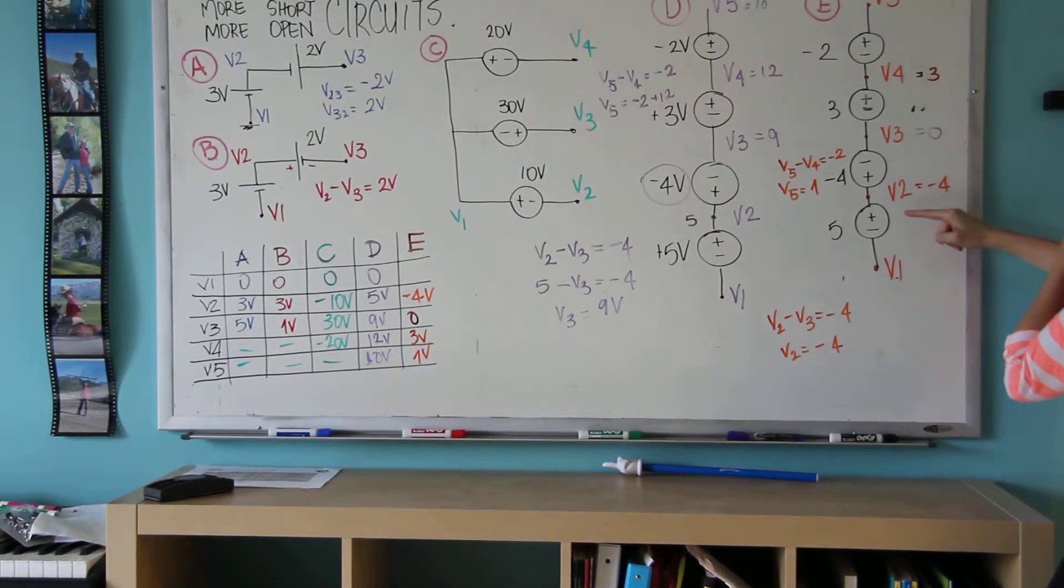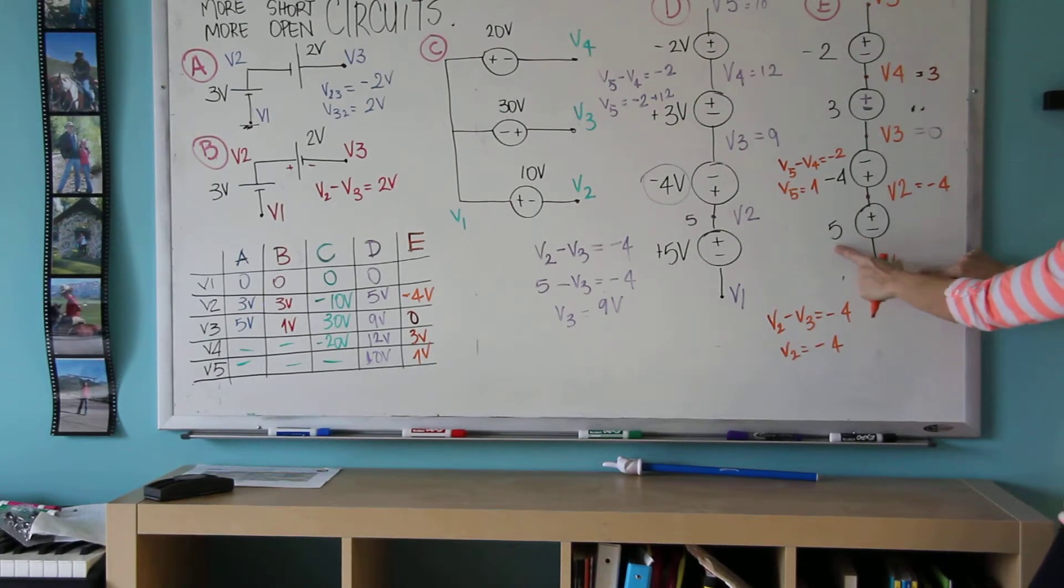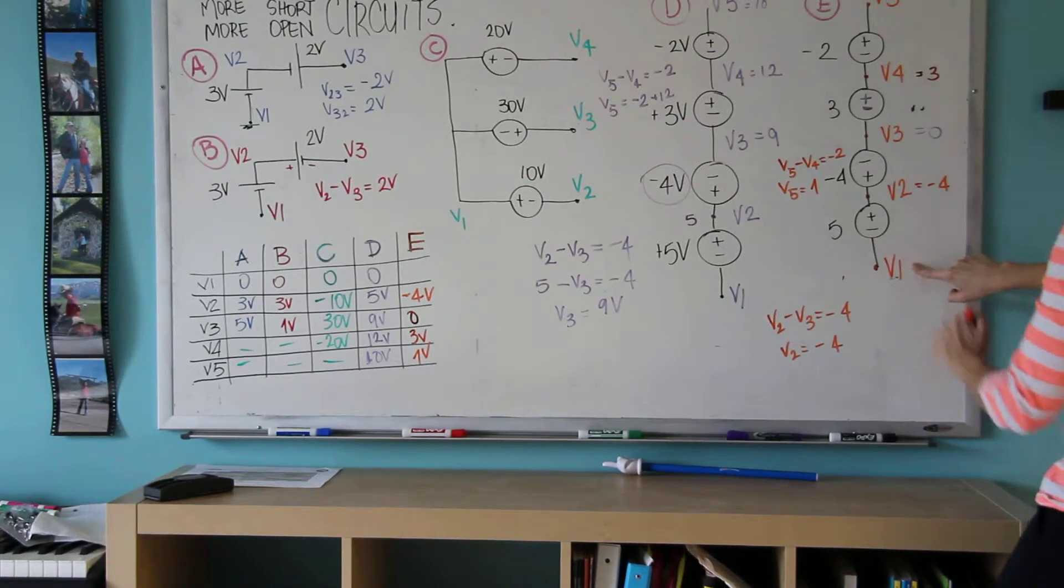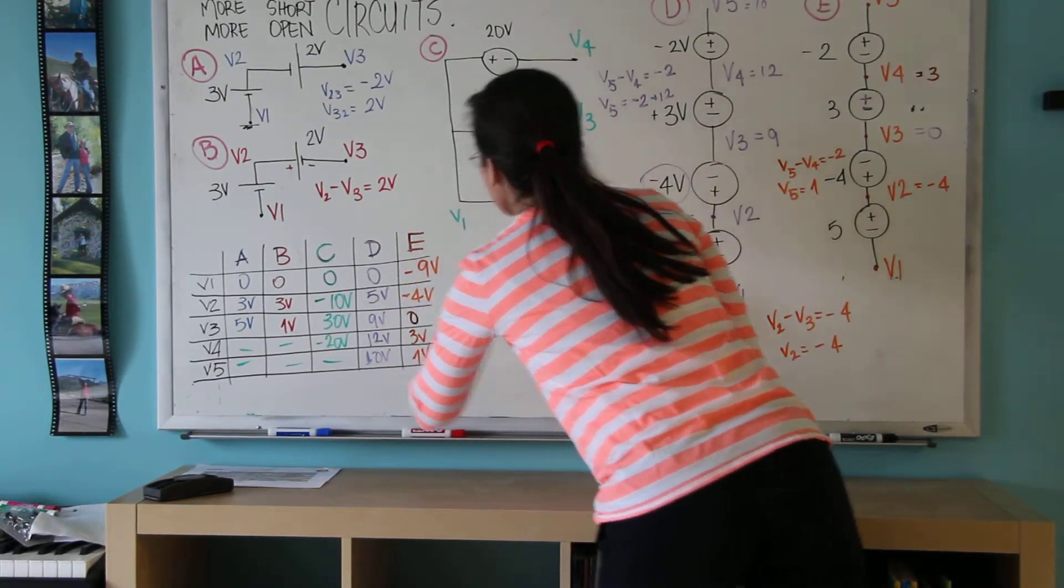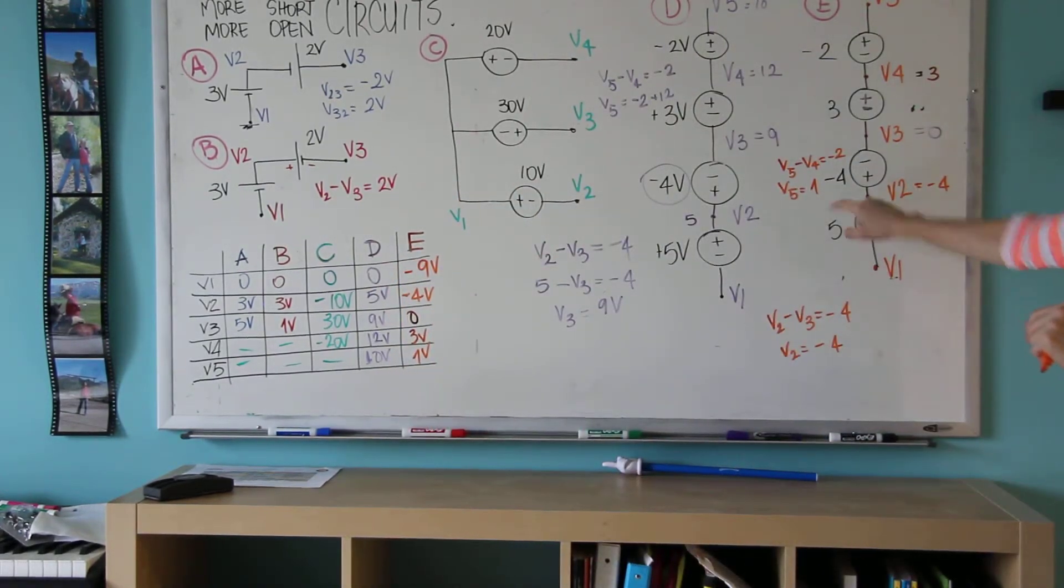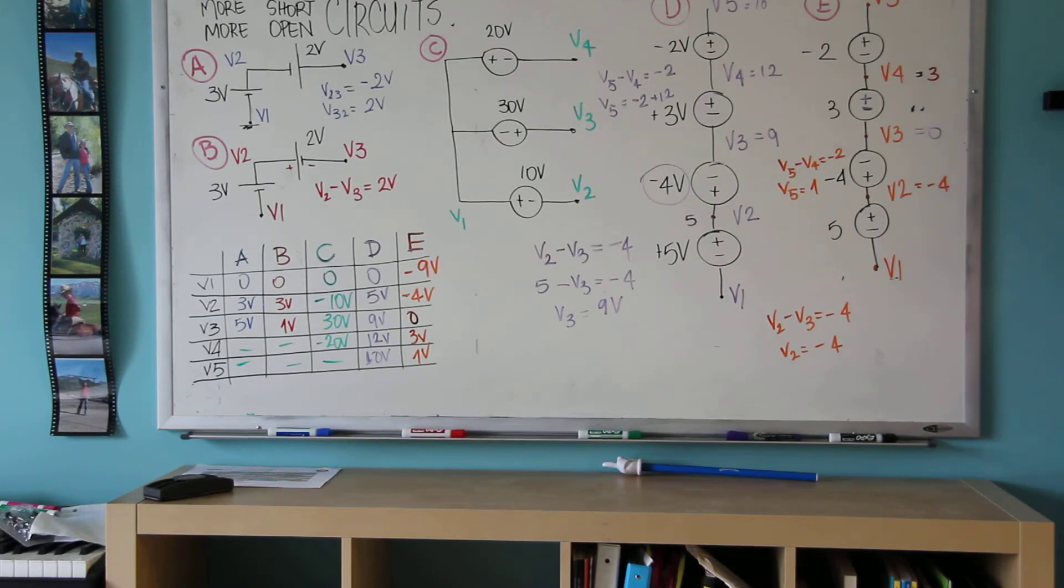And now V2 minus V1 needs to be 5. And therefore, this is minus 9. So this is 5 volts below this. These are the answers.